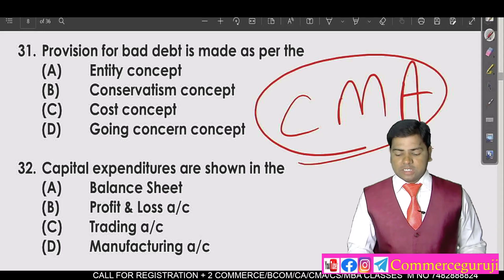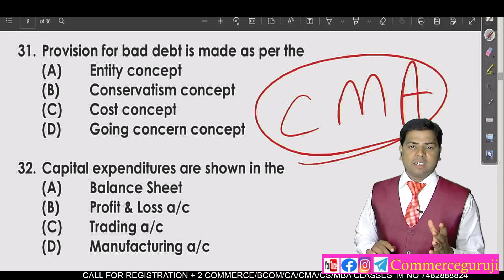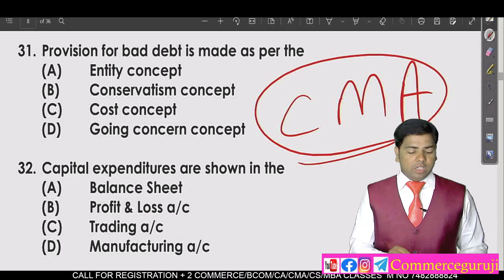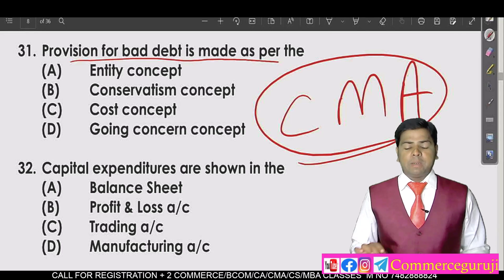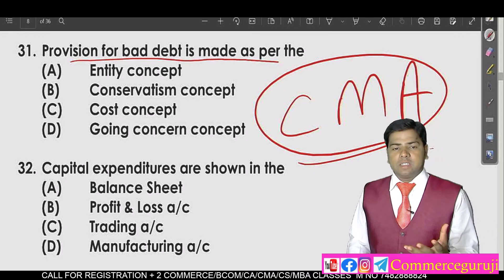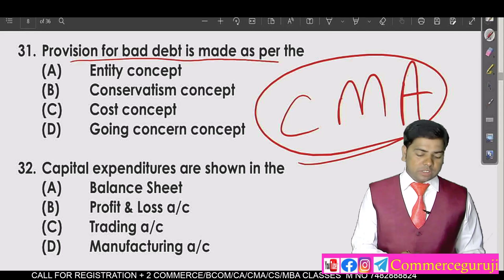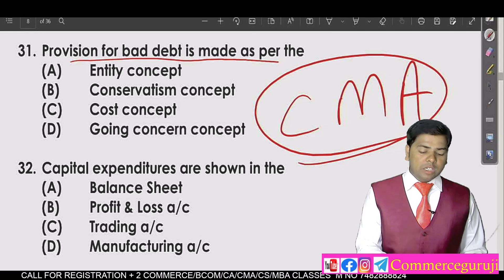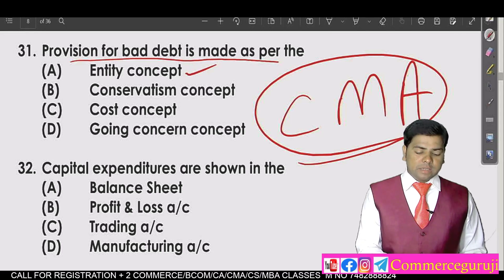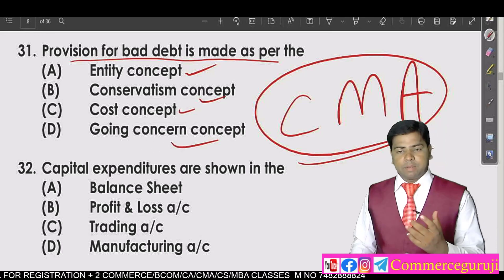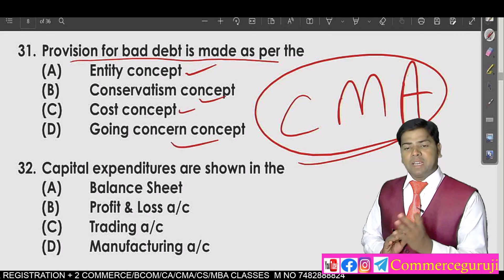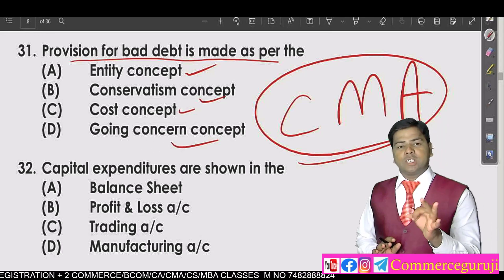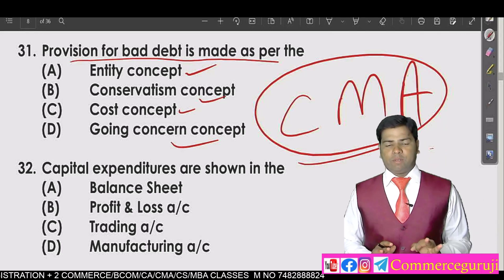Question 31 has started. I have already covered up to question 30 before. The problem for bad debts is made as per which concept — the entity concept, conservatism concept, cost concept, or going concern concept? I have told you all the concepts and you will find all of them there.